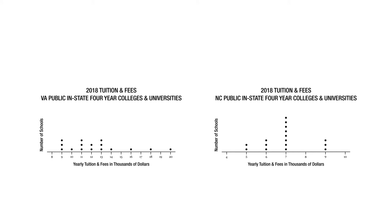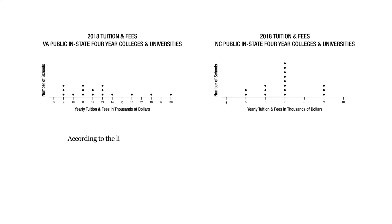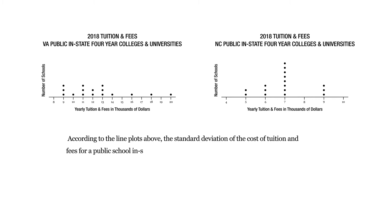And instead of bigger ranges, each range is just $1,000. So we have $9,000, $10,000, $11,000, and so forth. We're going to compare the state of Virginia to the state of North Carolina. The question is, according to the line plots above, the standard deviation of the cost of tuition and fees for public schools in-state students blank.